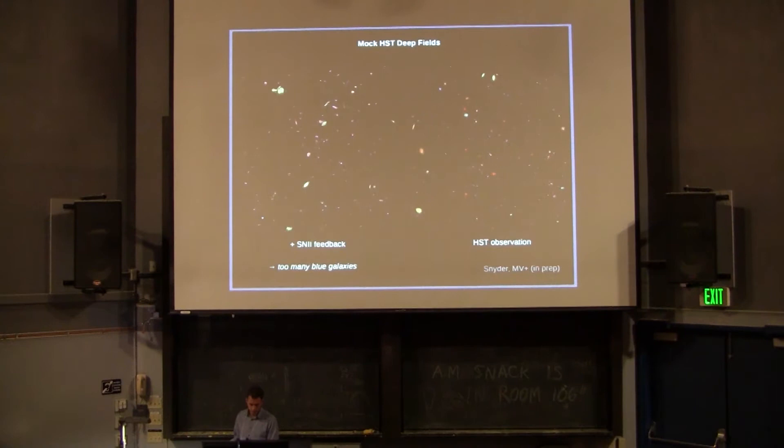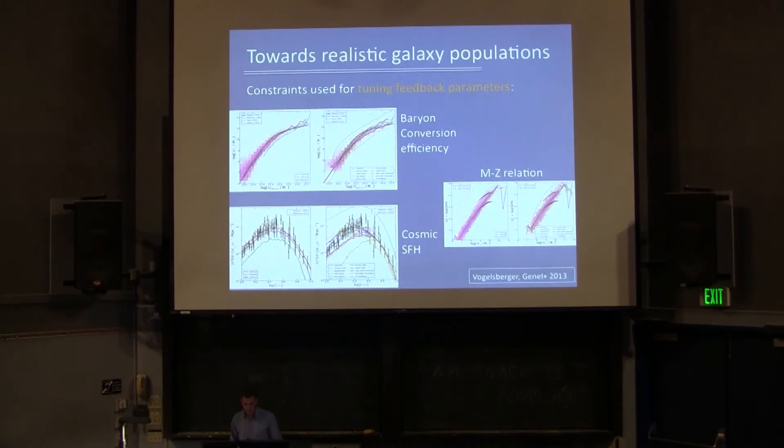When we add supernova feedback, that reduces significantly the number of low-mass galaxies. But you see, they are still bluer than the real universe. And when we add the AGN feedback, we get a universe which looks much better compared to the real one.